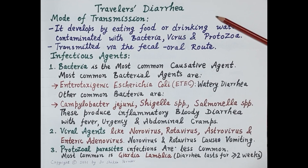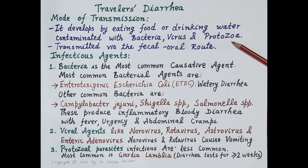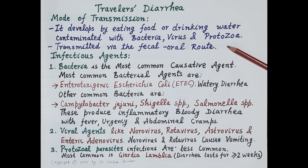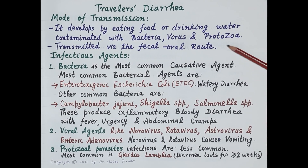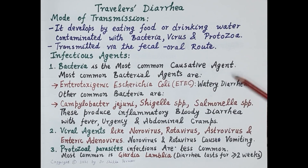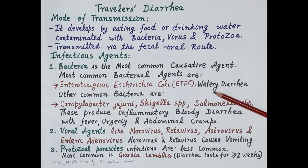Regarding the mode of transmission, travelers' diarrhea develops by eating food or drinking water contaminated with bacteria, viruses, and protozoa. It is usually acquired by fecal-oral transmission of the causative pathogen, typically through ingestion of food or water contaminated with feces.